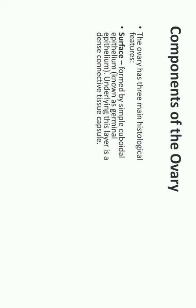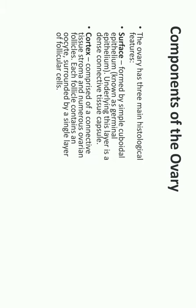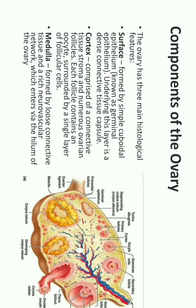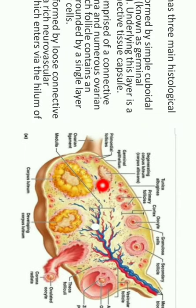The ovarian structure has mainly two parts: cortex and medulla. The surface is formed by simple cuboidal epithelium. The cortex is the outer layer which contains the developing follicles in different stages. It is a compact cellular layer with two parts: an outer fibrous layer called tunica albuginea, and below it the germinal epithelium layer. The cortex contains ovarian follicles at different stages, connective tissue cells, and interstitial cells which form the theca interna.